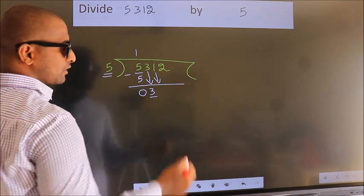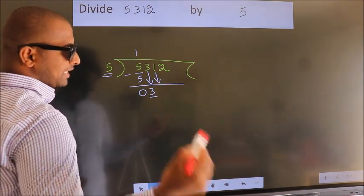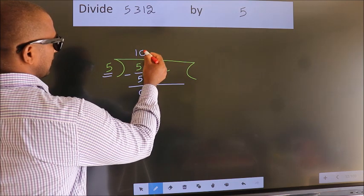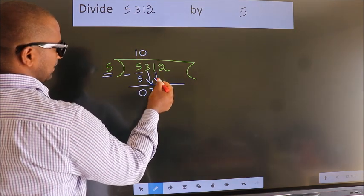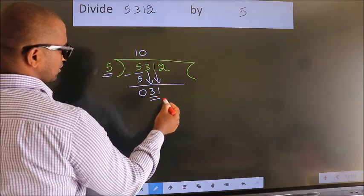And the rule to bring down a second number is put 0 here. Then only we can bring down this number. So 31.